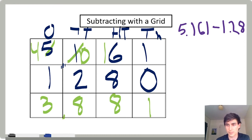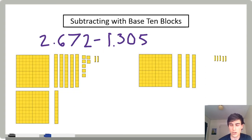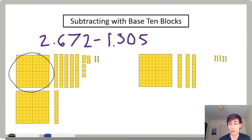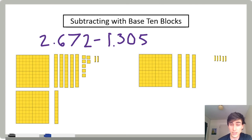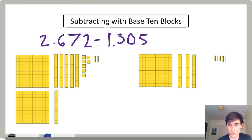Now let's try another strategy. We can also subtract decimals using base ten blocks. We're going to think of these as one whole — maybe you've seen them as a hundred in the past, but since we're using decimals today we're going to think of that as one whole. We're going to subtract two and 672 thousandths minus one and 305 thousandths. We have our ones, tenths, hundredths, and thousandths. Let's start by subtracting our thousandths.